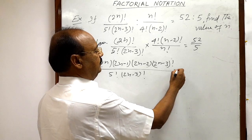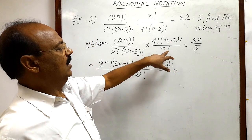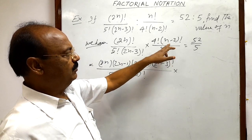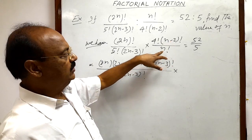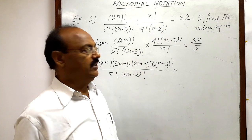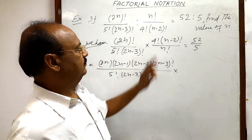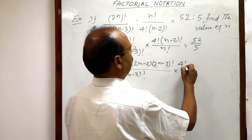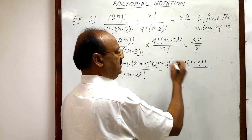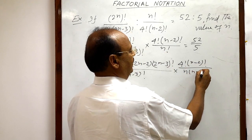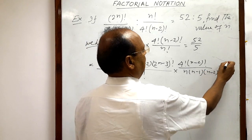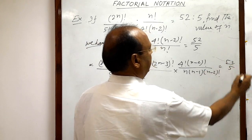Similarly, n! will be expanded and reduced down to (n-2)!, so that (n-2)! cancels from numerator and denominator. So we write 4! times (n-2)! in the numerator, and in the denominator n times (n-1) times (n-2)!. This equals 52 by 5.